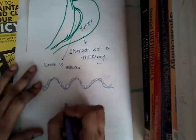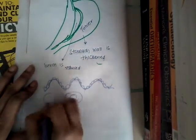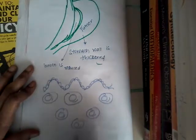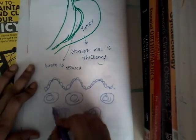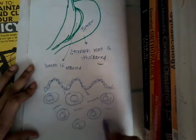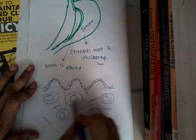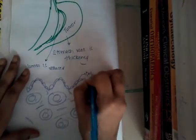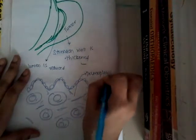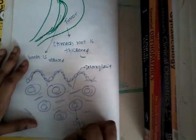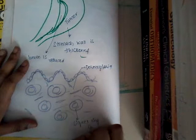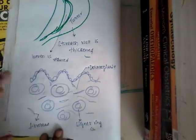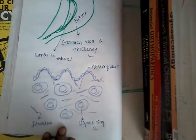Histologically in linitis plastica, you see the rugal folds and columnar epithelium. The characteristic finding is the presence of signet ring cells. In between the signet ring cells, there is fibrosis with fibroblasts. This fibrosis is called desmoplasia, and you also see signet ring cells with fibrosis and fibroblasts — these are the histological features of linitis plastica.